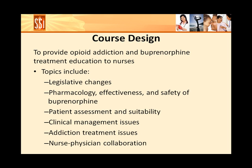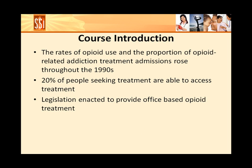After completing each module, you will have the opportunity to test your knowledge. The rates of opioid use and the proportion of opioid-related addiction treatment admissions steadily and sharply rose throughout the 1990s. In fact, only 20% of people seeking treatment for opioid use disorders are able to access treatment. To address the lack of treatment availability, legislation has been enacted to provide office-based opioid treatment using medications such as buprenorphine.